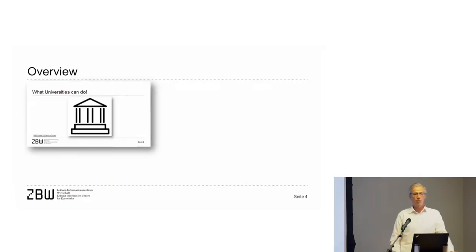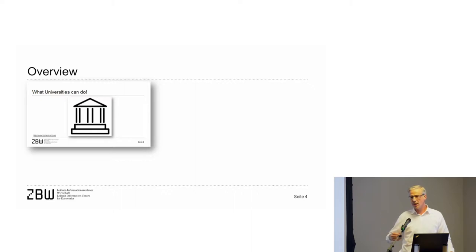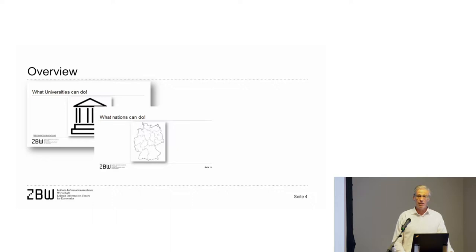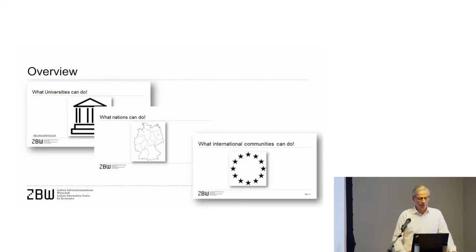The structure of the talk is as follows: I would like to show you what universities can do to promote the open science movement. Then in a very short part, I will address what a nation can do — here I refer to a few activities in Germany. The third part addresses what international communities can do, putting the European Open Science Cloud movement in context of the CoAR activities, like your next generation repository report.